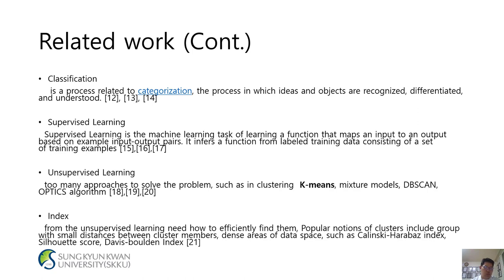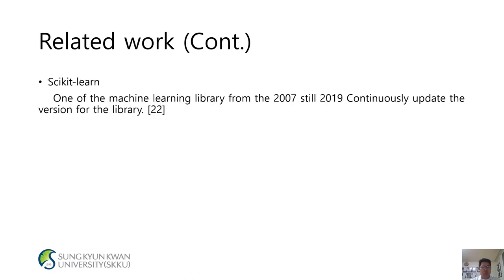References 18, 19, 20. From unsupervised learning, the goal is to efficiently find clusters. A parallel notion includes groups with small distance between cluster members and dense areas of data space, such as the Calinski-Harabasz index and Silhouette score (Reference 21). One of the machine learning libraries, updated continuously since 2007 through 2019, is referenced as 22.